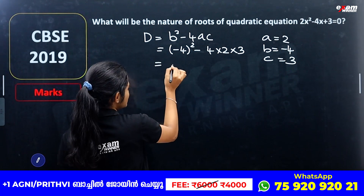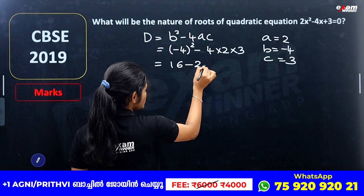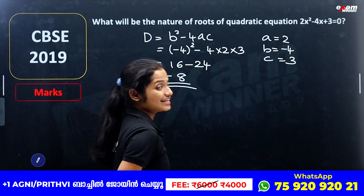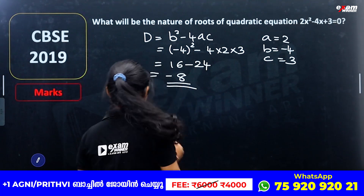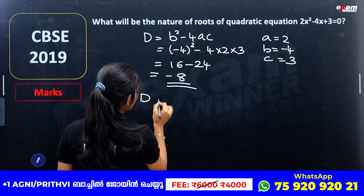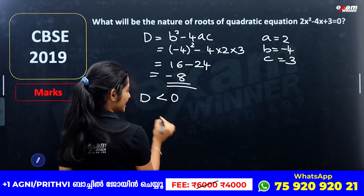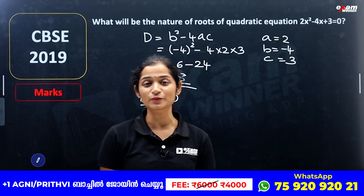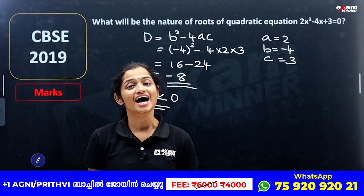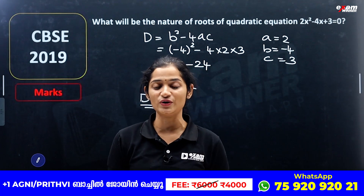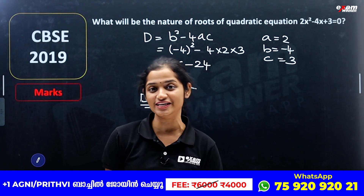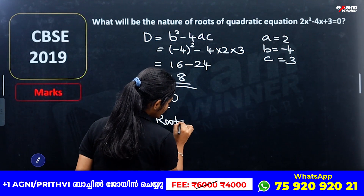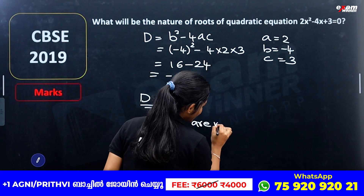What is (-4)²? That is 16, minus 24. So D = 16 - 24 = -8. This is a negative number, so D is less than 0. Since D is less than 0, the roots are not real.